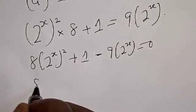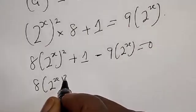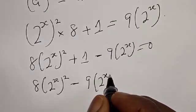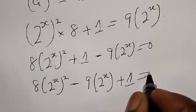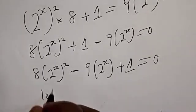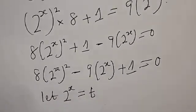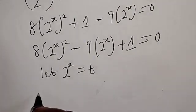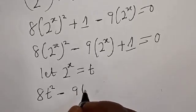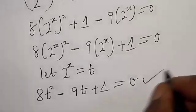Then we have 8 into 2 raised to power s squared, minus 9 multiplied by 2 raised to power s, plus 1, is equal to 0. Now let 2 raised to power s equal to t. Therefore, we have 8t squared minus 9t plus 1 is equal to 0. This is a quadratic equation.